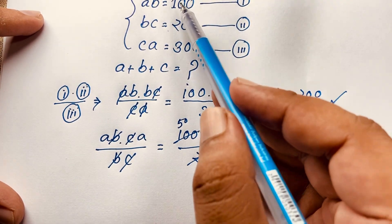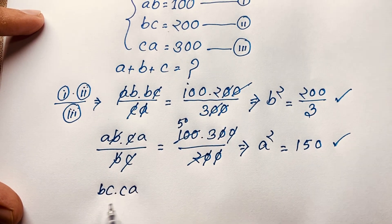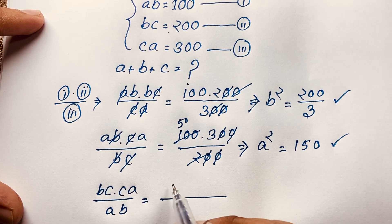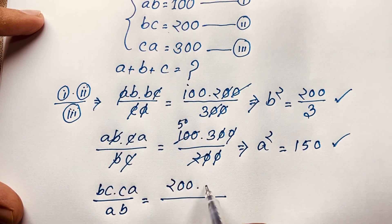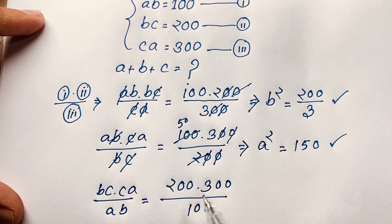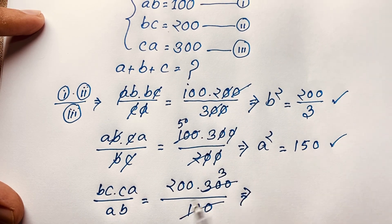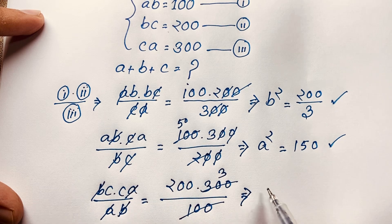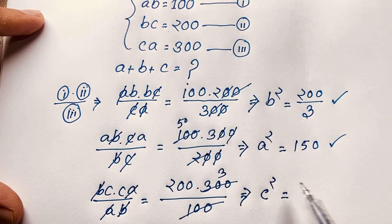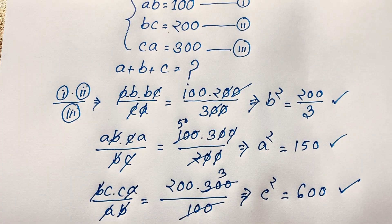Now I multiply the second and third equations and divide by the first equation. So it will be BC times CA over AB, which equals 200 times 300 divided by 100. That simplifies to a factor of 3. B cancels, A cancels, leaving C squared, and 200 times 3 is 600. So we find C squared is equal to 600.